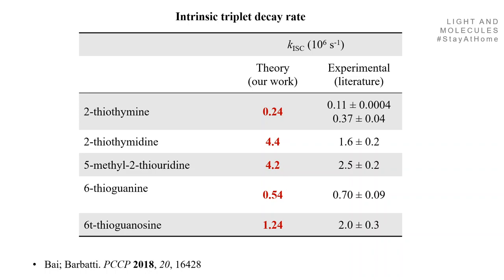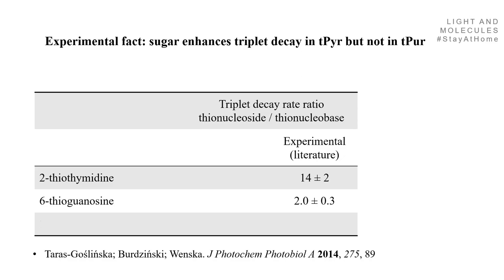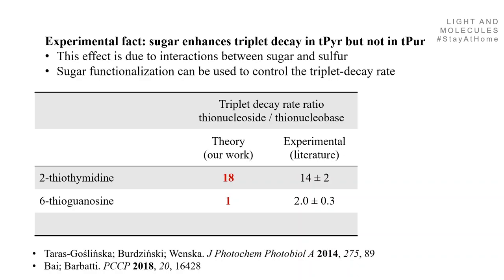Here is an interesting detail. Looking at the experimental data, the triplet decay ratio between the rate for the thionucleoside and the thionucleobase is 14 times for thiothymine and 2 times for thioguanine. This means the rate is much larger in the case of the pyrimidine than in the case of the purine. Our hypothesis is that this effect is due to interactions between the sugar and the sulfur. The sugar functionalization in thiothymine can be used to control the triplet decay rate, and theory provides quite good agreement with experiment.